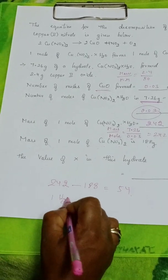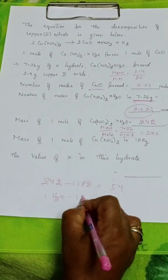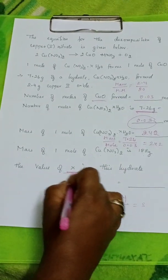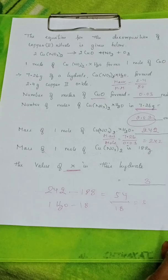Then, 1 mole of water, mass of 1 mole of water is 18. So, 54 by 18 will give you 3. So, the x value is 3.